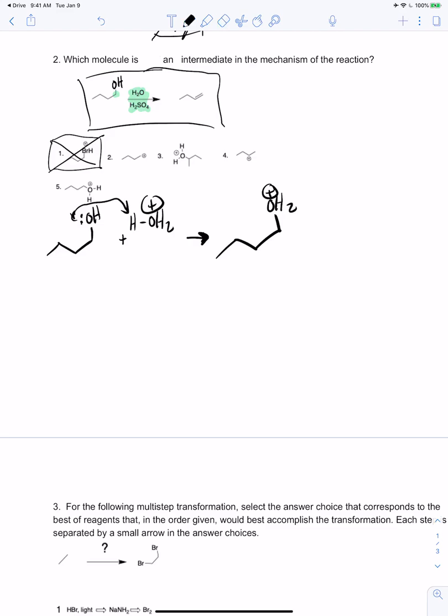The big picture there is that you never form a primary carbocation. So what actually happens here is a weak base comes in, takes that hydrogen off and kicks out the water molecule. And we just get an E2 elimination. So that's the whole mechanism.